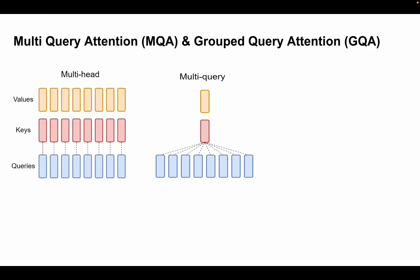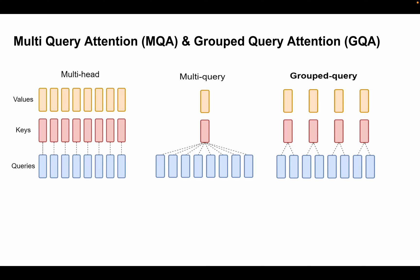There are cons to multi-query attention — it was found that its performance degrades compared to multi-head attention. Taking a step back, a common trend when facing this kind of tradeoff is to go with a hybrid approach. In MHA we have eight heads with eight keys and values; in MQA we have eight queries with only one key and value. The hybrid approach between these two turns out to be grouped query attention.